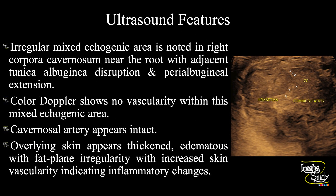In summary, an irregular mixed echogenic area is noted in the right corpora cavernosa near the penile root with adjacent tunica albuginea disruption and peri-albugineal extension. Color Doppler shows no vascularity within this mixed echogenic area. The right cavernosal artery appears intact. The overlying skin appears thickened and edematous with fat plane irregularity and increased skin vascularity, indicating an inflammatory process. Overall, these features conclude this as a case of grade 2 penile fracture.